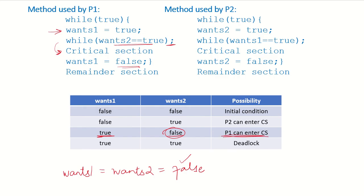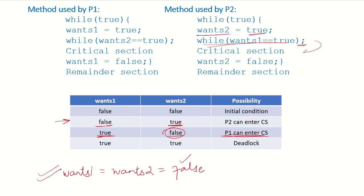Now let's say P1 is not running and only P2 is running, starting from the initial values. P2 sets wants2 to true. The condition 'while wants1 is true, do nothing' is checked — but wants1 is false, so P2 can enter the critical section and then change wants2 back to false.